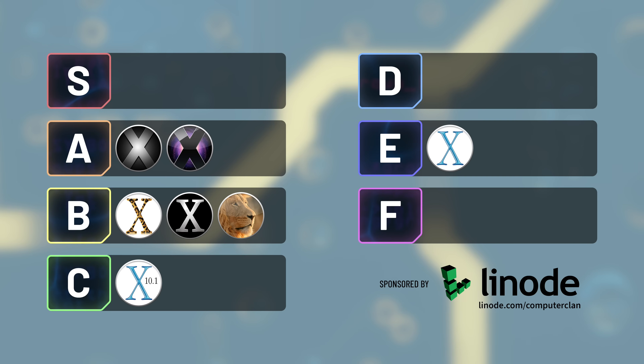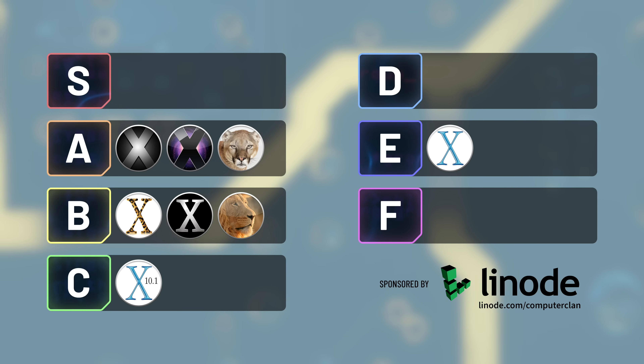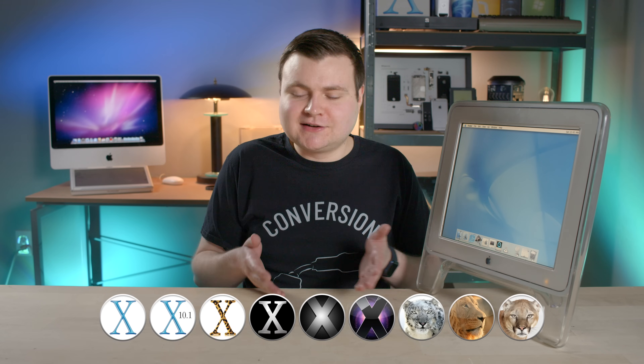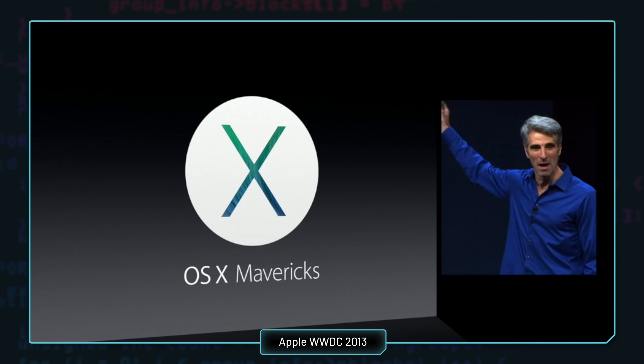Mountain Lion sold for only $19.99 — the cheapest price of any paid version of macOS. Mountain Lion was also the last big cat release, because after nine cats you kind of have to move to something else. So Apple moved to notable California locations, like Mavericks. Mountain Lion was also the last paid version of macOS — with Mavericks onward, all upgrades are free even until today.